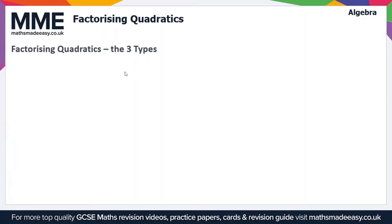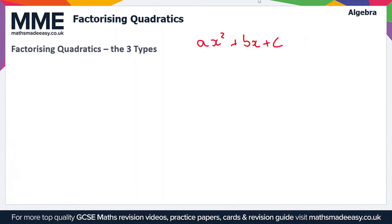Welcome to the Maths Made Easy tutorial on factorizing quadratics. There are going to be a few videos on this topic, but before we get into any example questions, we're going to look at a quick trick to help you with factorizing any expression. A quadratic is an expression in the form ax squared plus bx plus c, where a, b, and c are the coefficients of x squared, x, and x to the power 0, which is just 1.